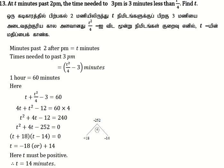Let's look at the 13th sum. At t minutes past 2pm, the time needed to 3pm is 3 minutes less than t² divided by 4.